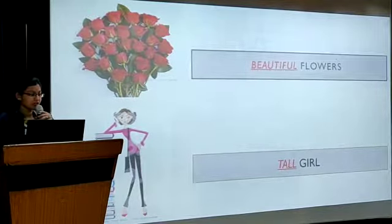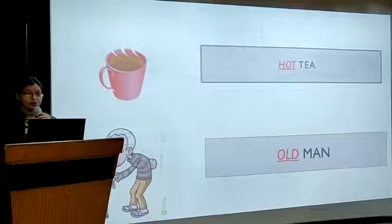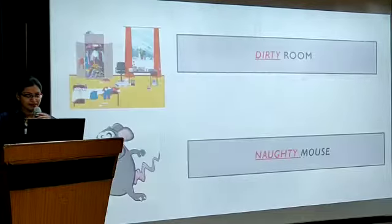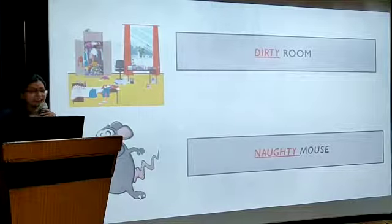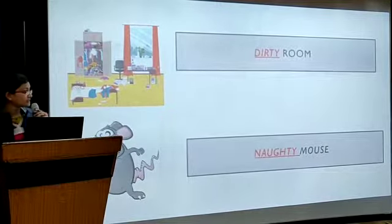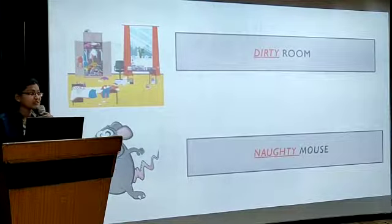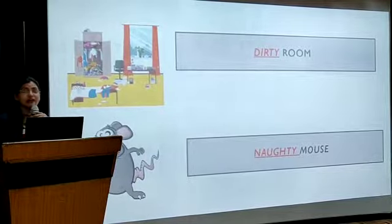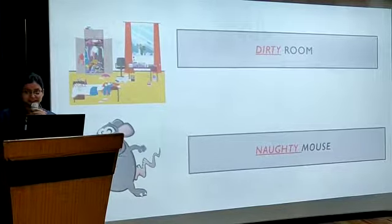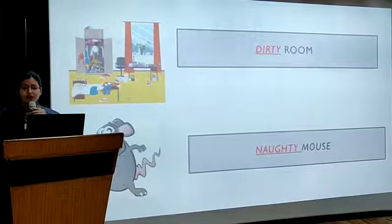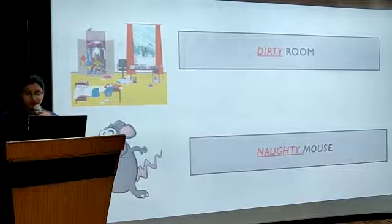Beautiful flowers, tall girl, hot tea, old man, dirty room, naughty mouth. So these words like tall, dirty, naughty, old, beautiful — these words are telling the speciality or they are describing someone or something. So these are describing words. To make your understanding more clear about it, I am showing you a video. Enjoy.